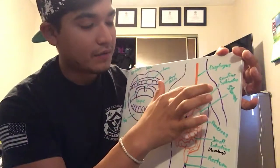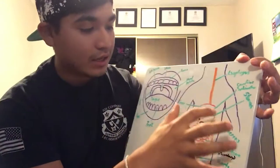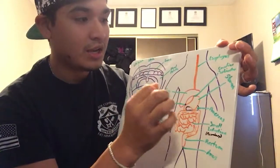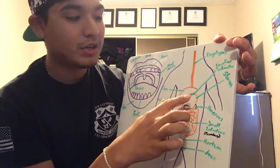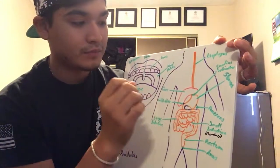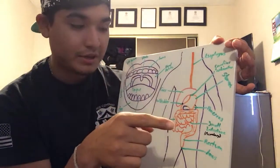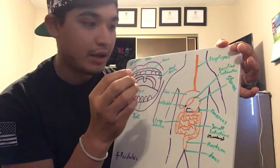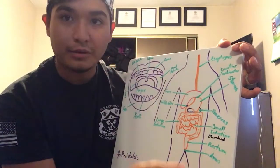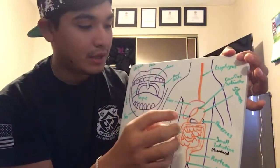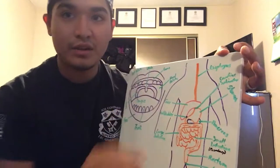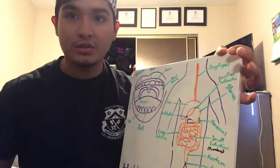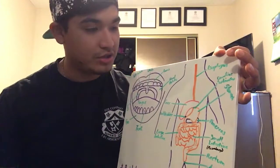Then the food goes down the esophagus and it enters through the cardiac sphincter, which is the entrance of the stomach. In the stomach you have the cardiac region, the fundus, and the pyloric. The stomach breaks down and digests food in order to extract necessary nutrients.